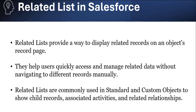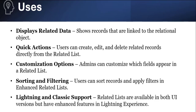Related lists are commonly used in standard and custom objects to show child records, associated activities, and related relationships. For example, in the Account and Contact objects, you can see the related Contacts of a particular Account directly on the Account record page.